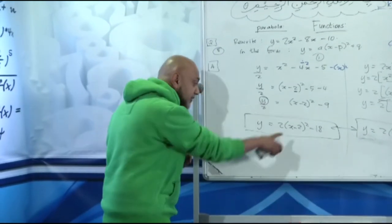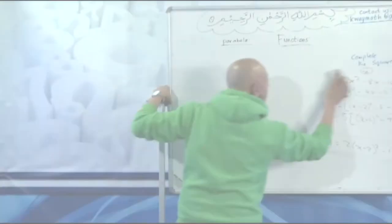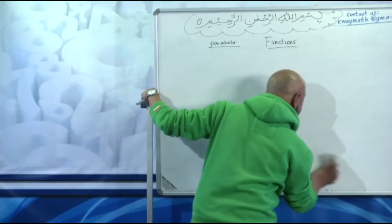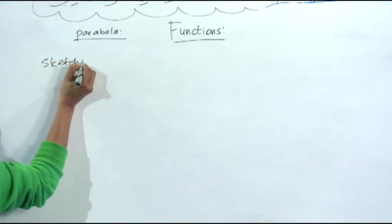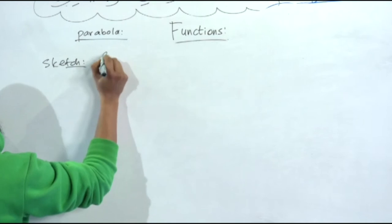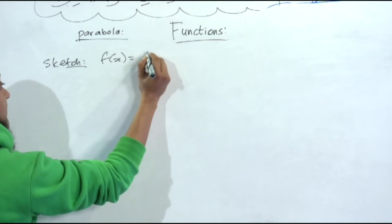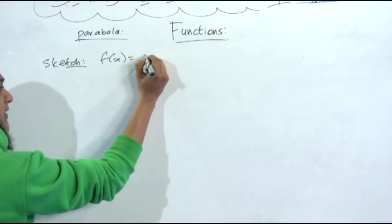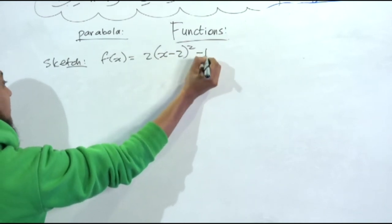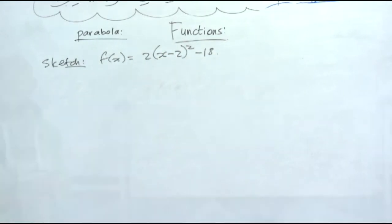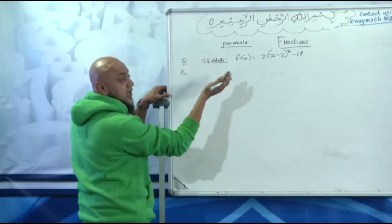Now we're going to do how to sketch a graph. They might ask you in the exam to sketch the graph. So the question is going to say: sketch the graph of f(x) = 2(x − 2)² − 18. That was the graph we had. Now they ask you to sketch it.